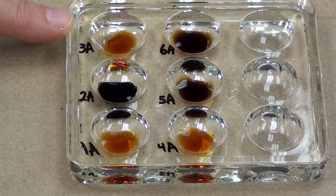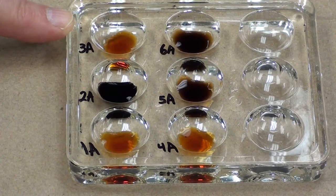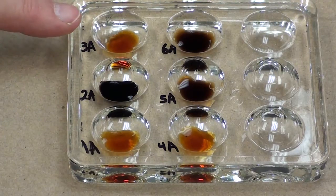Spot plate 3, that test tube contained maltose and water. Again, no starch, no black color.